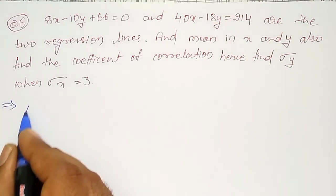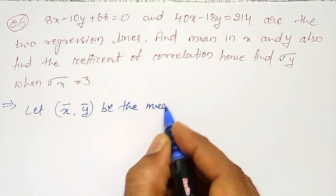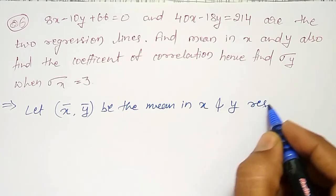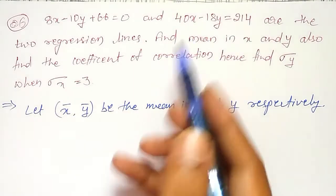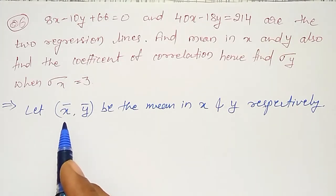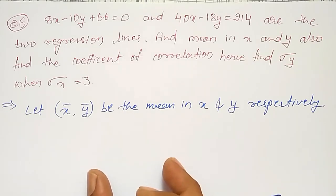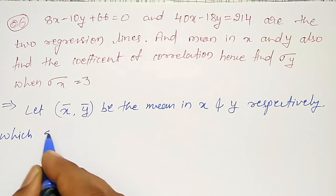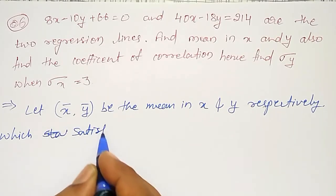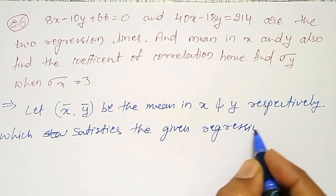Let X bar and Y bar be the mean in X and Y respectively. As X bar and Y bar are the means in X and Y, they must lie on those straight lines. X bar is the mean of X, which is in between the given values of X, and Y bar is also in between the given values of Y. Therefore, they also satisfy these regression line equations.